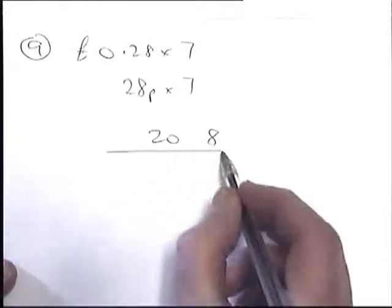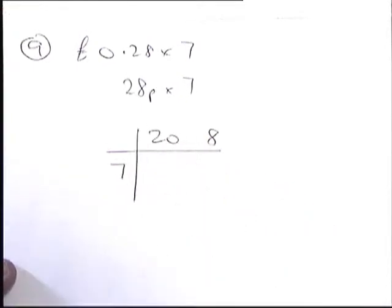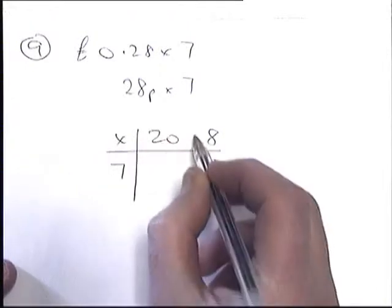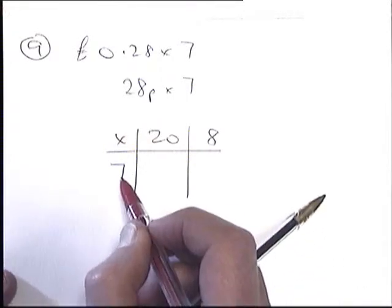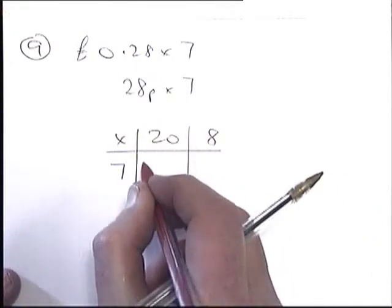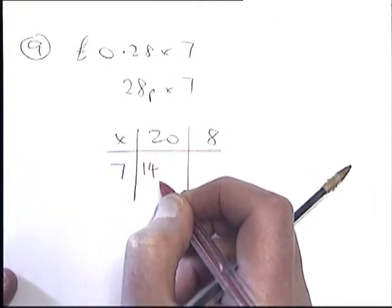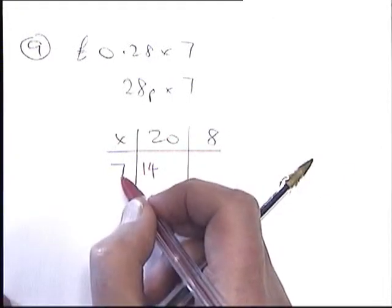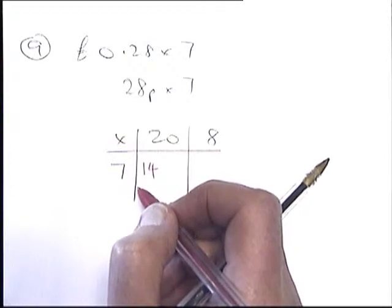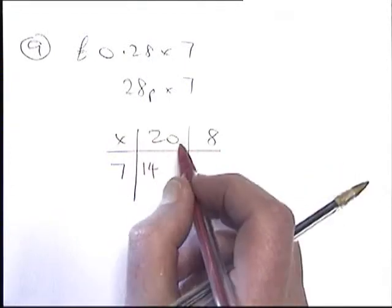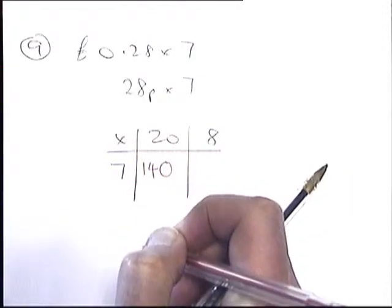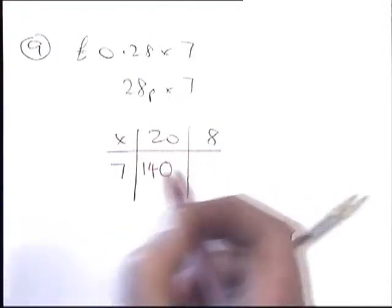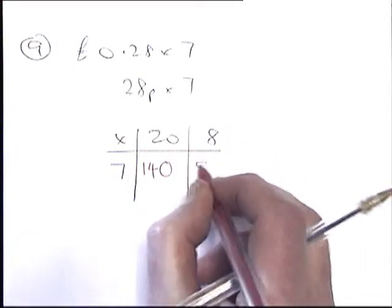We're going to times that by 7 using a grid, and just like last time we're going to ignore any noughts to start with and put those on afterwards. 7 times by 2 is 14 — that's something you need to know from your times table. Then I need to put that 0 back on, and 7 times by 8 is 56.